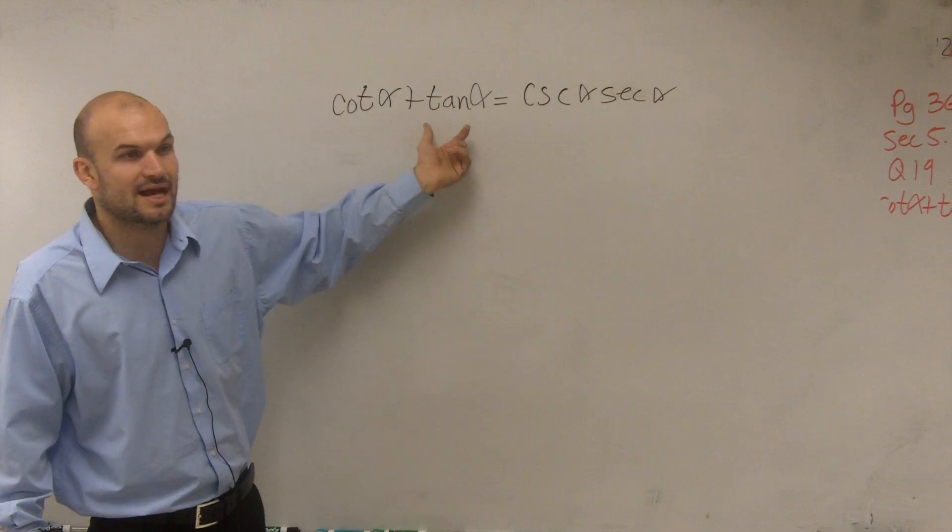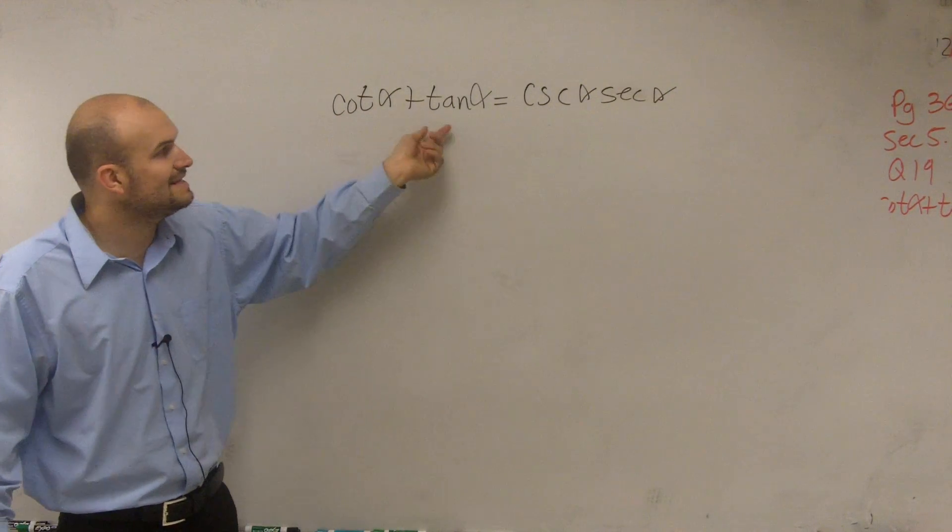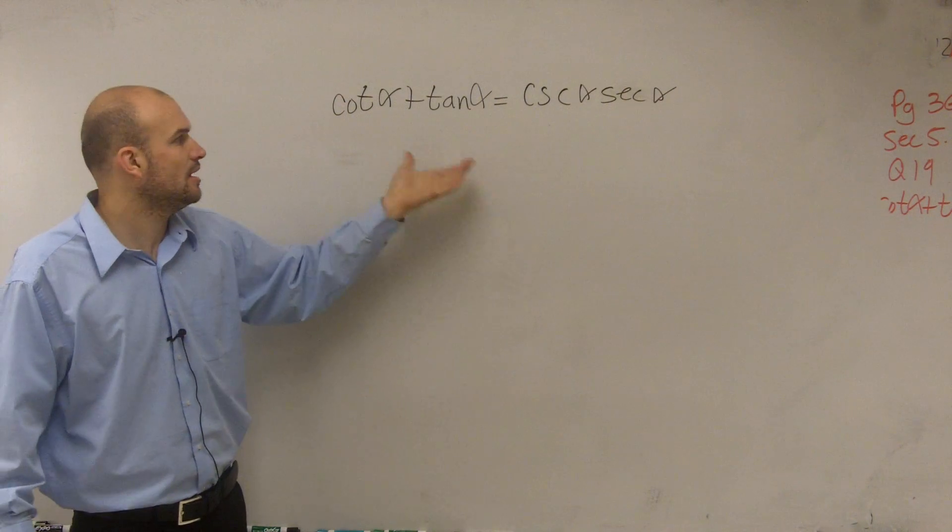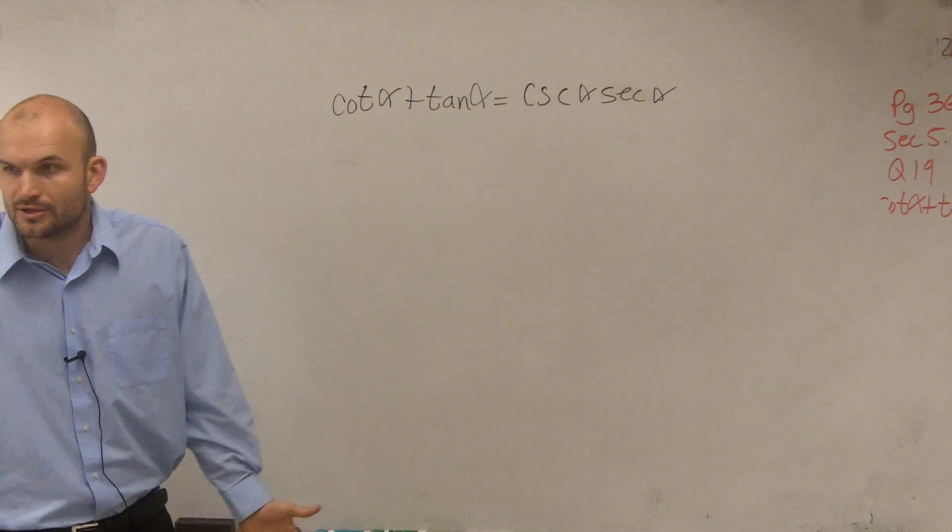And what I'm going to do is, obviously, if here they're separated by an addition sign and these are multiplied, therefore I need to combine these two terms. Well, you can't combine tangent and cotangent. They're not like terms.